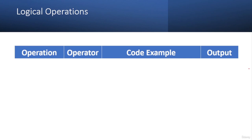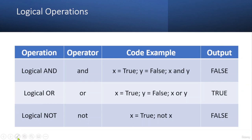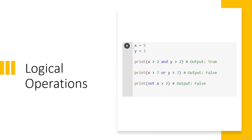In Python, logical operators combine or manipulate boolean expressions. There are three: 'and' returns true if both expressions are true; 'or' returns true if either expression is true; 'not' returns the opposite of a boolean expression. For example, with x = 3 and y = 5: 'x > 2 and y > 2' returns true because both conditions are true; 'x > 7 or y > 7' returns false because both are false; 'not (x > 2)' returns false because x > 2 is true but 'not' negates it.